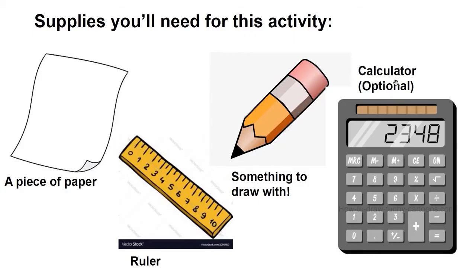Today, you're going to draw a solar system and calculate its habitable zone. The supplies you'll need are a piece of paper, a ruler, something to draw with, and a calculator. The calculator is optional.